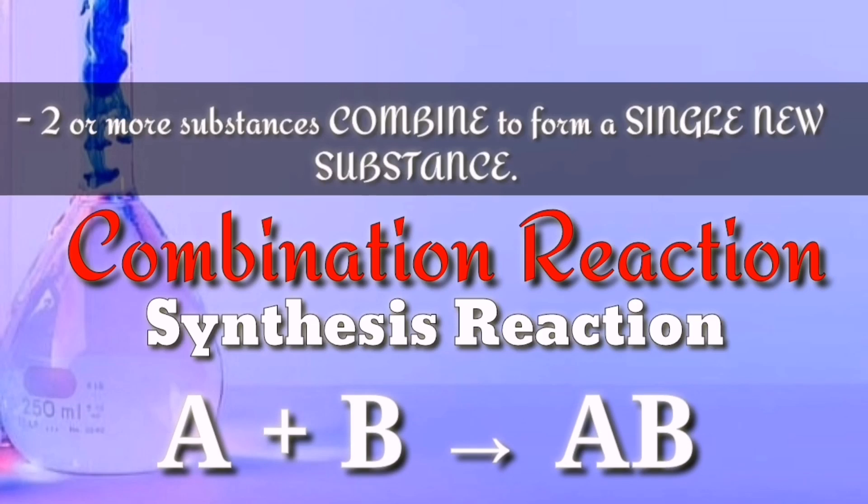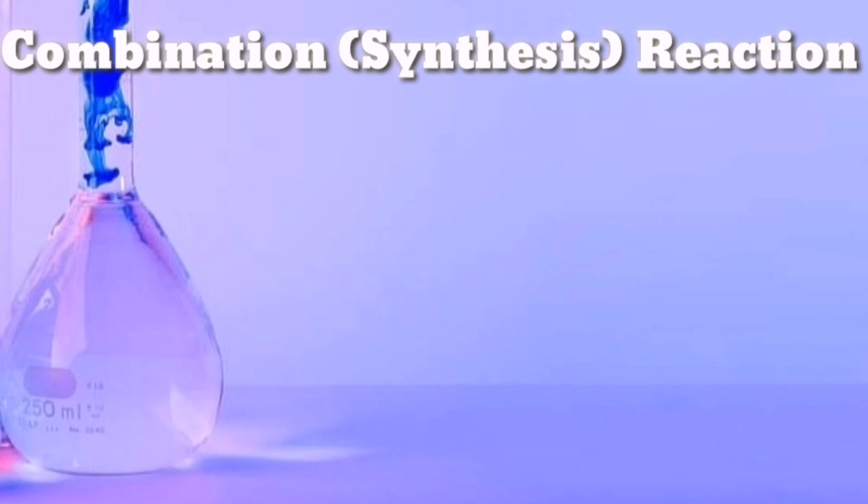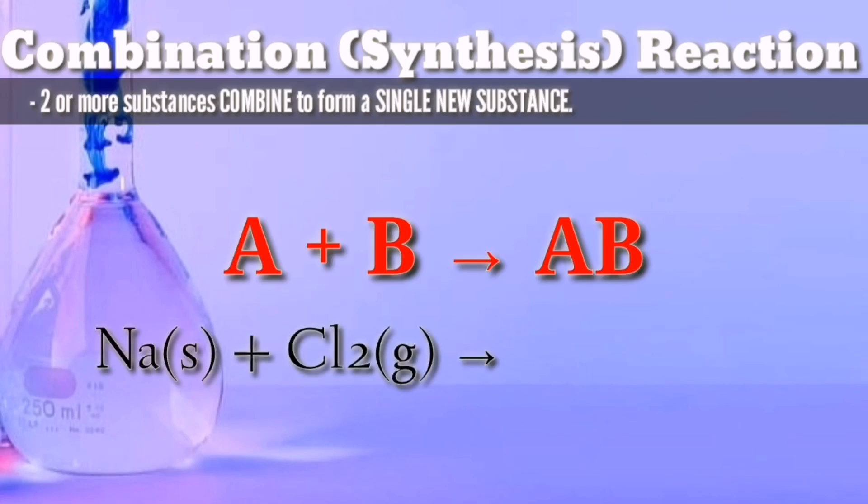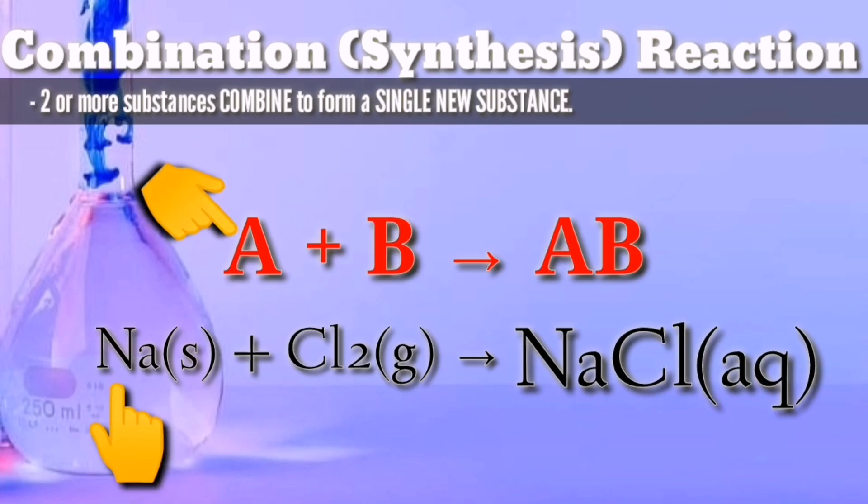One combination reaction is two elements combining to form a compound. Solid sodium metal reacts with chlorine gas to produce solid sodium chloride. A is sodium, B is chlorine gas. Putting these two together, it will form sodium chloride, the AB compound. Make sure to write the chemical formula correctly by always considering the charges of each element.